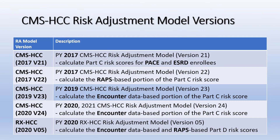The CMS-HCC model predicts medical expenditures covered under Parts A and B Medicare. For Payment Year 2021, for non-PACE risk scores, CMS will blend 75% of the risk score using diagnoses from encounter data with 25% of the risk scores using diagnoses from RAPS.